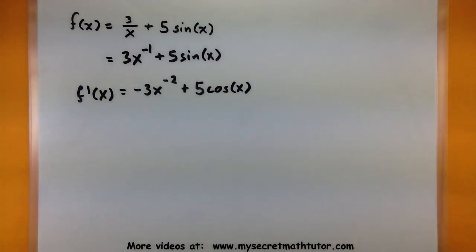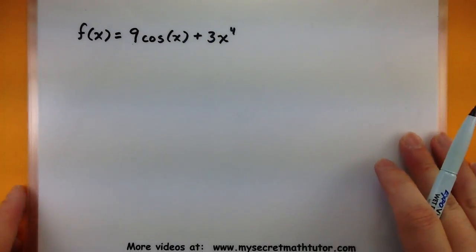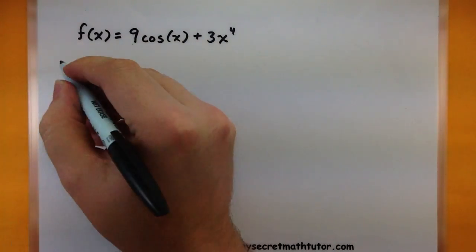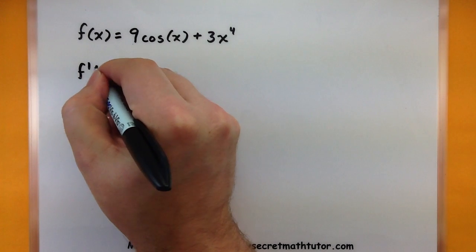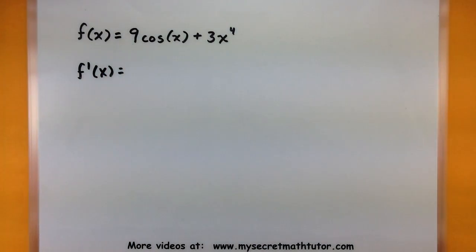Let's try another one just because it is kind of quick, that way we can get in some more practice. So let's find the derivative of this guy. We're going to look at 9 cosine of x plus 3x to the 4th.